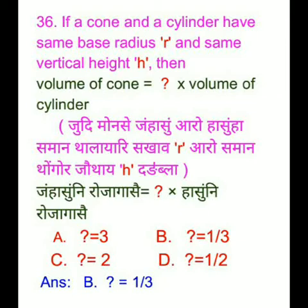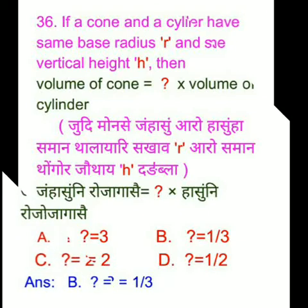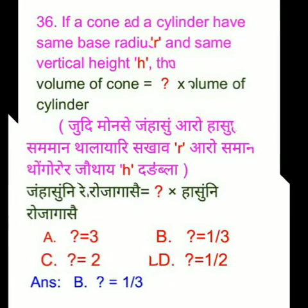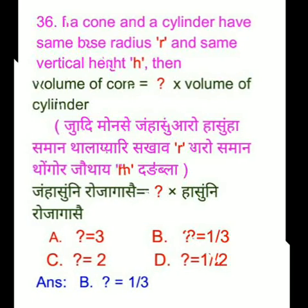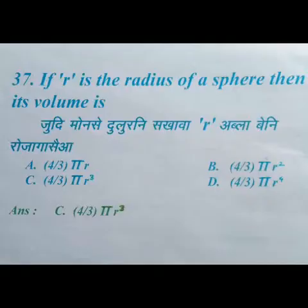If a cone and a cylinder have the same base radius R and the same height, then the volume of the cone equals what fraction times the volume of the cylinder? The answer is option B: 1 by 3.